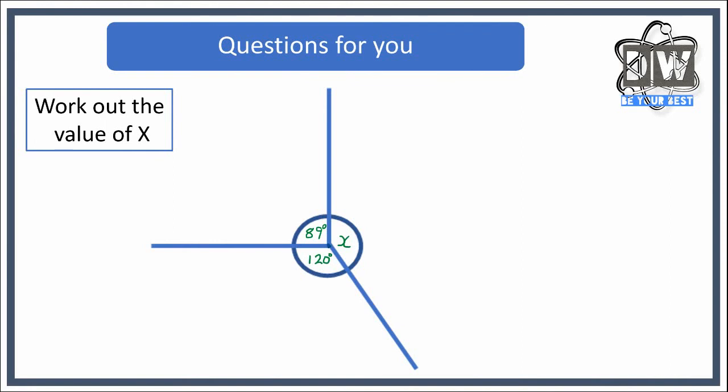Okay, so if we have our 89 and we add our 120 to that 89, we end up with 209. So we know the whole thing is worth 360, so all we're going to do is take away that 209 from 360, and we are left with, believe it or not, 151 degrees. So x is worth 151 degrees.